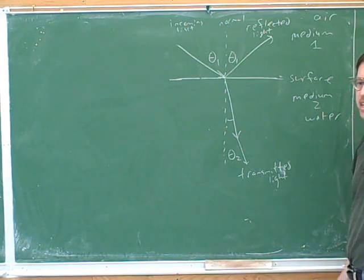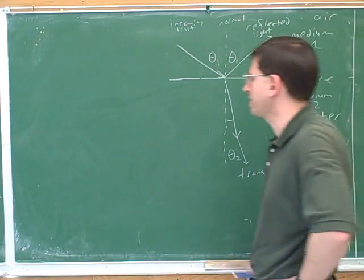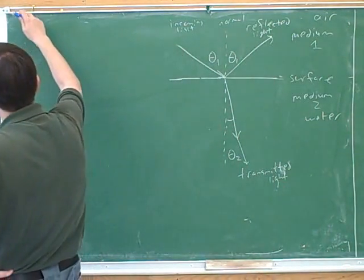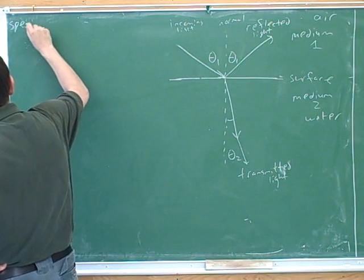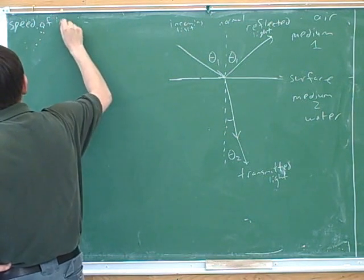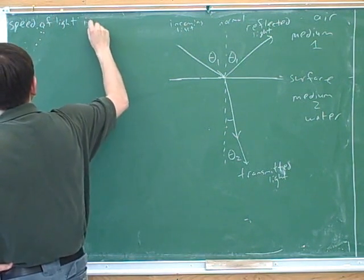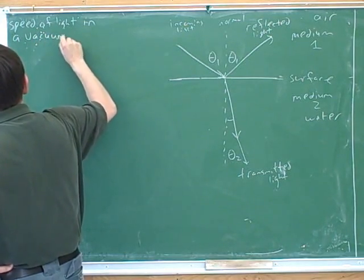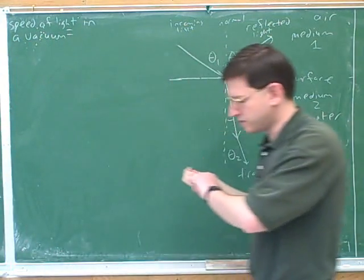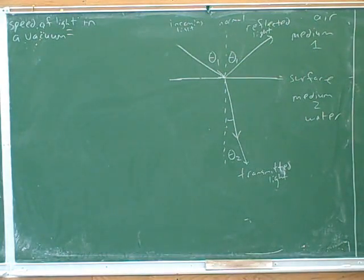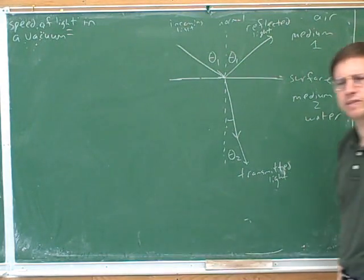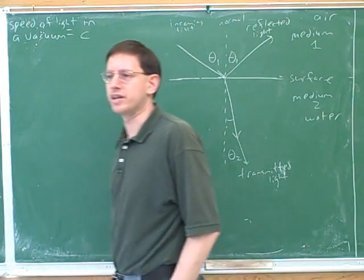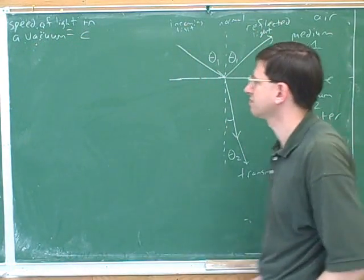This is going to be based on the index of refraction, which takes a little while to explain. Let's start with the speed of light in a vacuum. There's a special symbol for the speed of light in a vacuum — it's C, as in E equals MC squared.